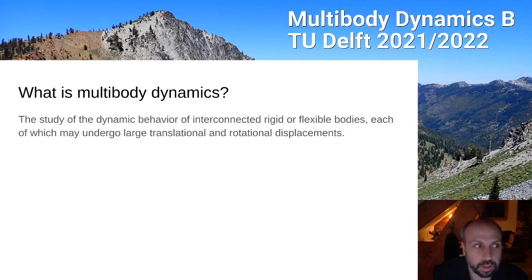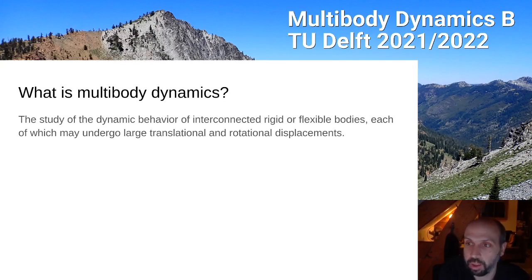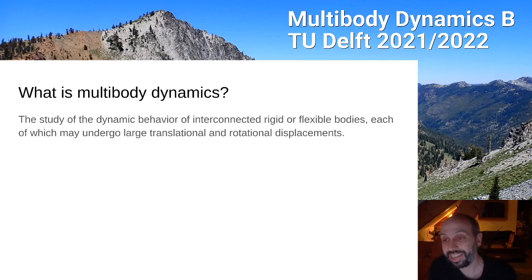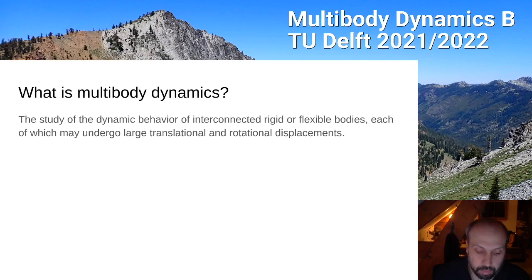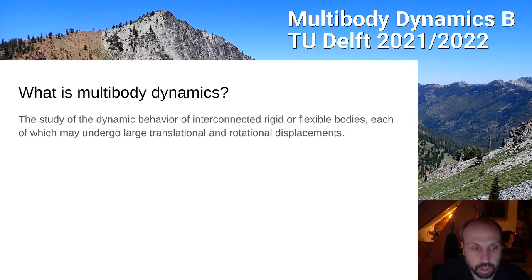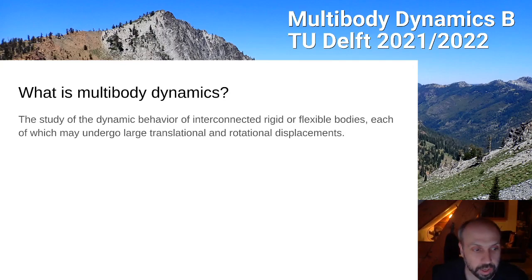So what is multibody dynamics? The Wikipedia definition is essentially the study of the dynamic behavior of interconnected rigid or flexible bodies, each of which may undergo large translational and rotational displacements. We're interested in how things move, especially when we have multiple bodies connected together. In this class we're only going to focus on rigid bodies, but these ideas are extendable to flexible bodies.